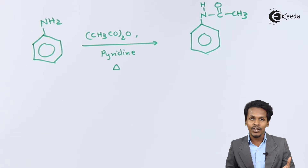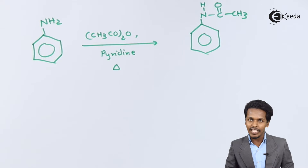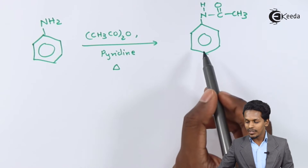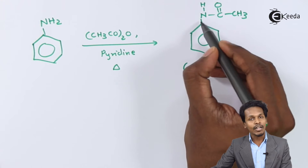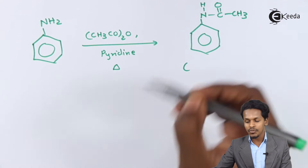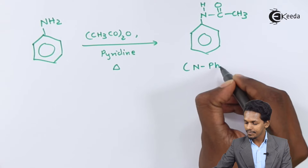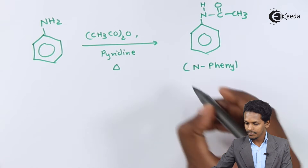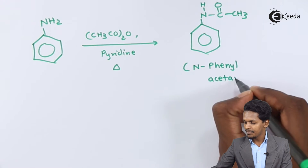During this reaction, the product obtained has a benzene ring where the NH₂ group is converted to an –NH–C(=O)–CH₃ group, which is the acetamido group. This is a less activating group, from which we can easily obtain a mono-halogen derivative. Since there is a phenyl group on the nitrogen, this product is named N-phenyl acetamide.